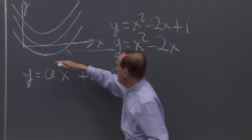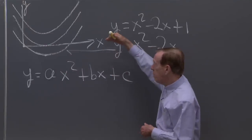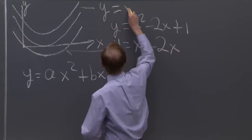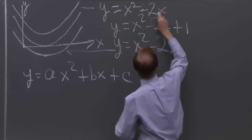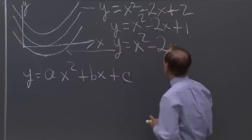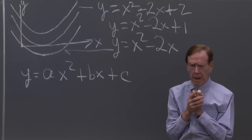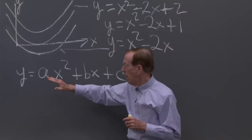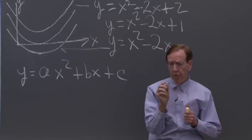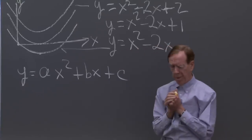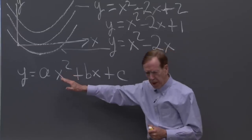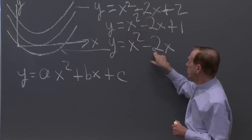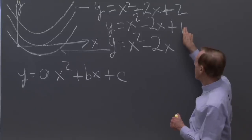So the second quadratic is x squared minus 2x plus 1 — I've lifted it up by 1. And then the next one is lifted up by another one, so the top one is y equals x squared minus 2x plus 2. Those are three particular quadratics, where a was 1, b was minus 2, and c changed from 0 up to 1 and up to 2.